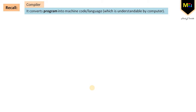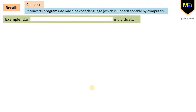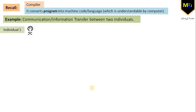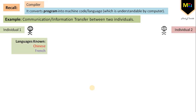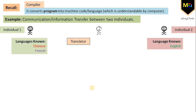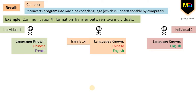Now, just to understand things in a better way, let's have an example of communication between two individuals — one knowing and understanding Chinese language as well as French language, and another knowing and understanding English language only. In order to perform a successful exchange of information between the two individuals, a translator is required. We have a translator who is proficient in translating Chinese to English.